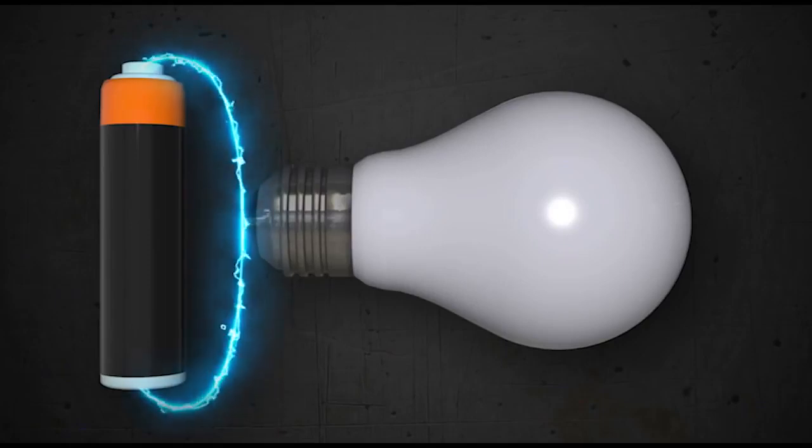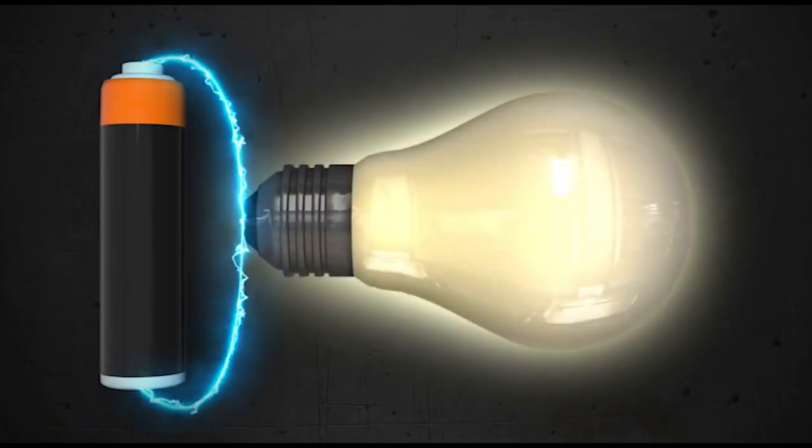Take a power source like a battery, run it to a light bulb and then back to the battery. Bingo, the light goes on.